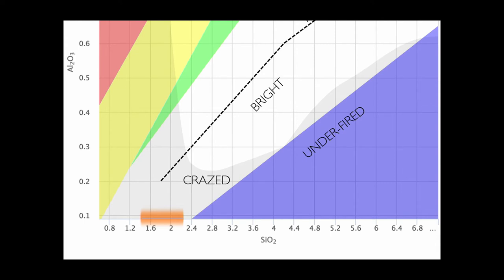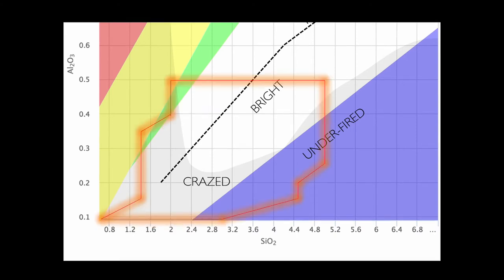Knowing that typical crystalline glazes are found in a limited tiny area, I decided to branch out and explore a much wider range. I created formulas from alumina levels as low as 0.04 to 0.5 alumina to see if crystal growth is possible outside of what was originally thought. As I moved across the map with each row I would increase the silica by 0.5 until I reached 5.0, then do the same for each next level of alumina I was testing.